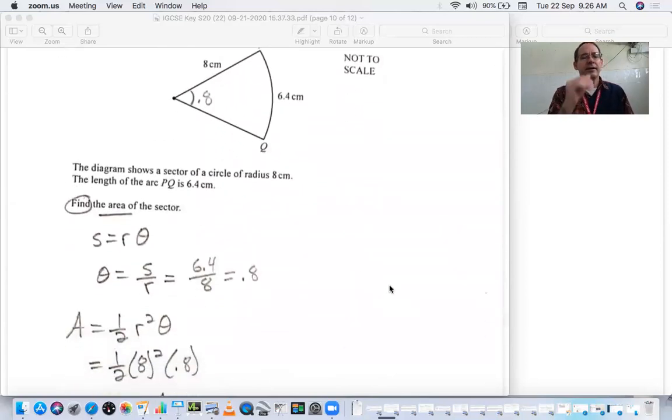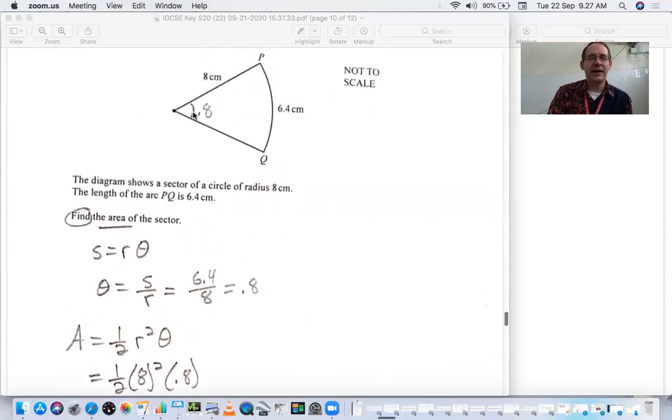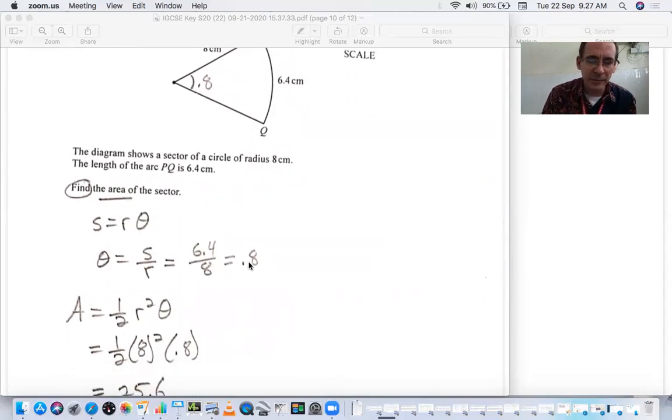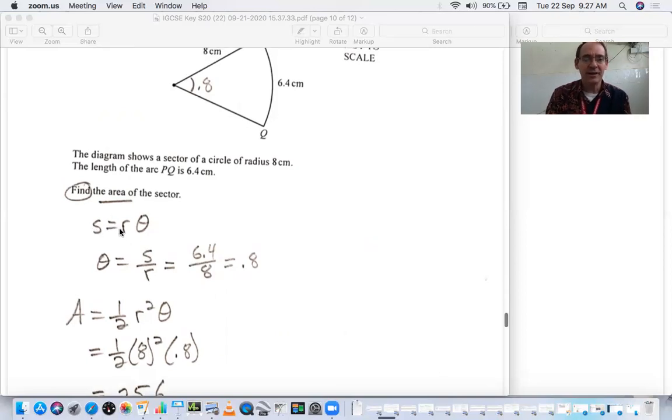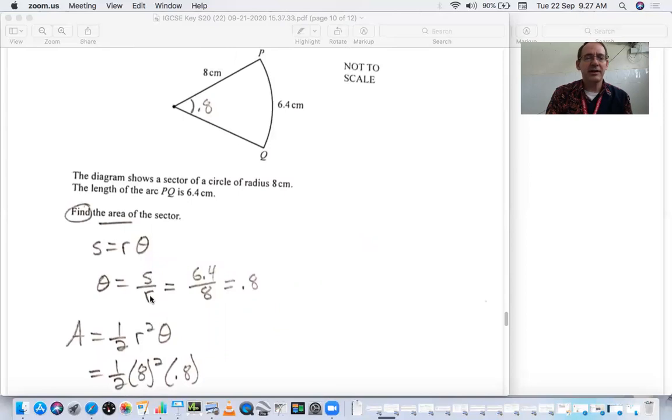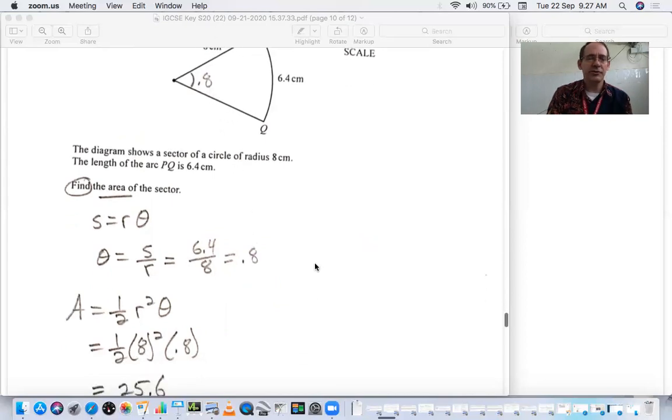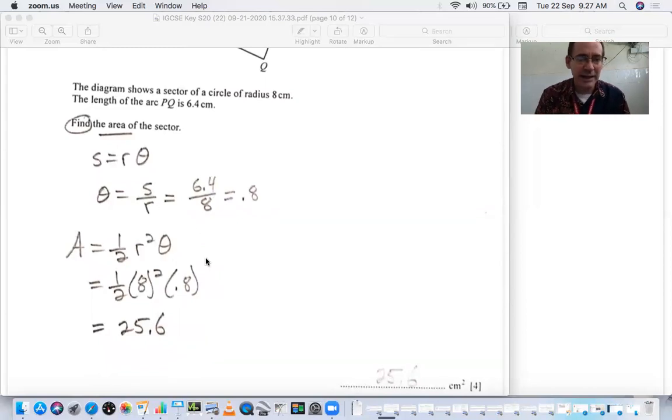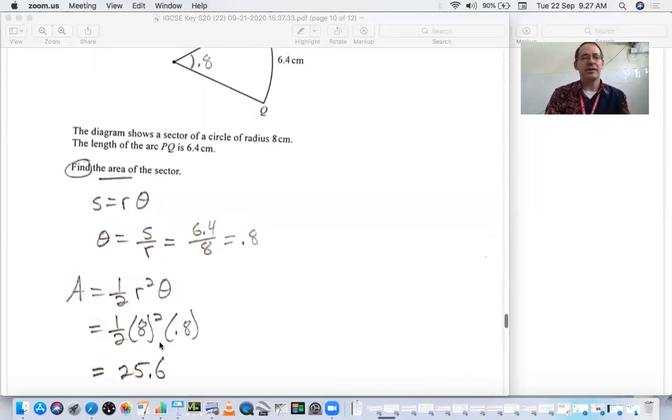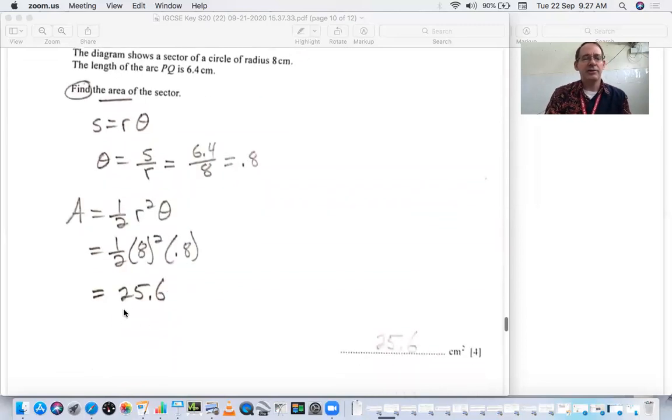Moving on here, we have a sector area. The diagram shows a sector of a circle of radius 8 and an arc length of 6.4. Find the area of the sector. First we need to find the angle. I am using radians formulas, not the degree formula. Arc length equals r theta. So theta is just arc length divided by r. 6.4 divided by 8 is 0.8. So this is 0.8 radians. Your area for a sector, using radian formula is one half r squared theta. You just plug in the r and the theta and you get 25.6.